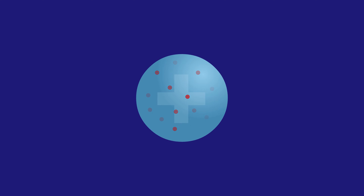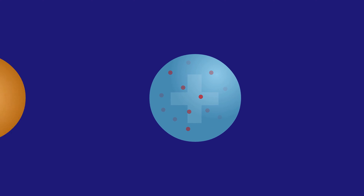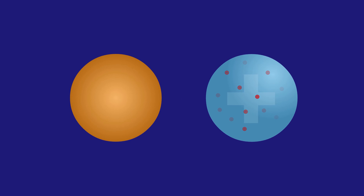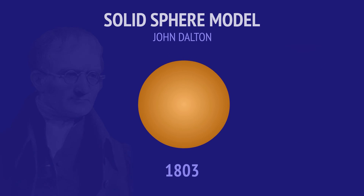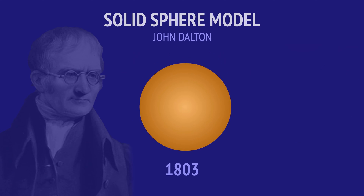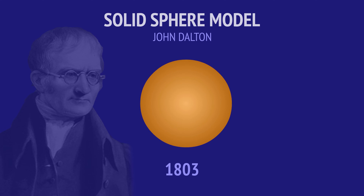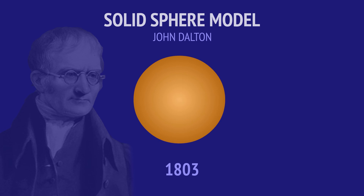In this video, we look at how the plum pudding model developed from our earliest model of the atom. In 1803, a scientist named John Dalton published his experiments and findings on the atom, marking the beginning of atomic theory.